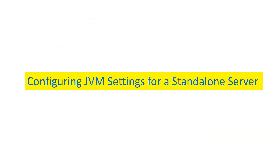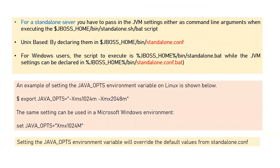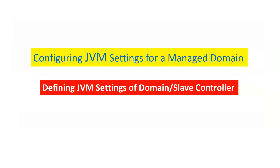For the standalone server, it is straightforward. When we start the standalone server we have a single standalone script, and inside the bin folder we have a file named standalone.conf for Linux/Unix systems, or standalone.conf.bat for Windows. To modify the JVM heap size for a standalone JBoss instance, just update the JVM parameter in that conf file. Alternatively, you can export the JAVA_OPTS parameter and then start your standalone server to reflect the new JVM size.